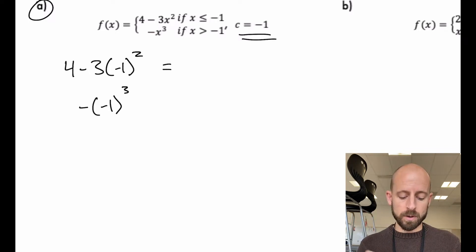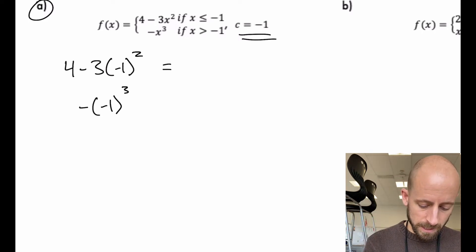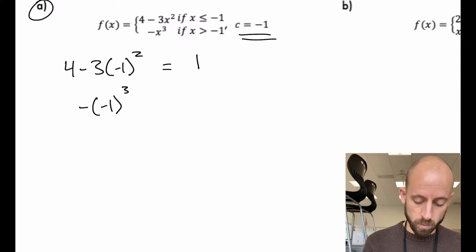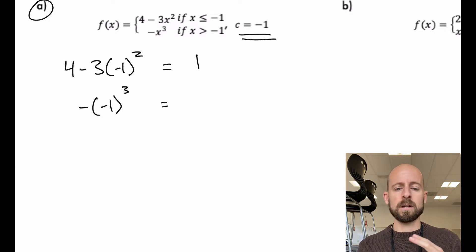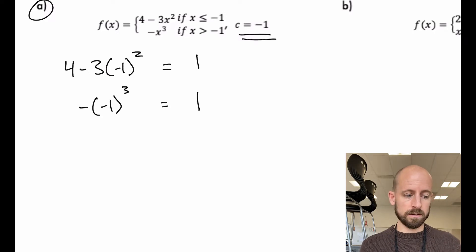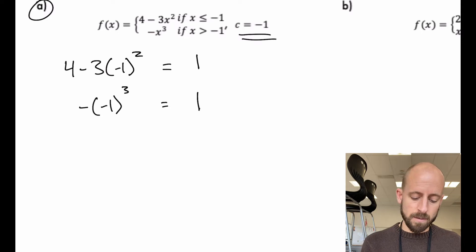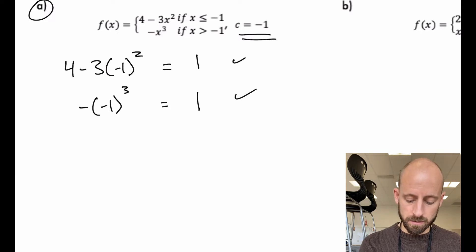I'm plugging in negative one for both and I'd like to make sure my y values are handing off at the same spot — they're matching up, not getting like seven and three. When I plug in negative one in the top, I get four minus three times negative one squared. Negative one squared is one, times three is three, four minus three is one. For the second piece: negative one cubed is negative one, and the negative of that is one. So both pieces give an output of one at negative one. I know it's continuous — both pieces are continuous regular polynomials. This tells me it's continuous.